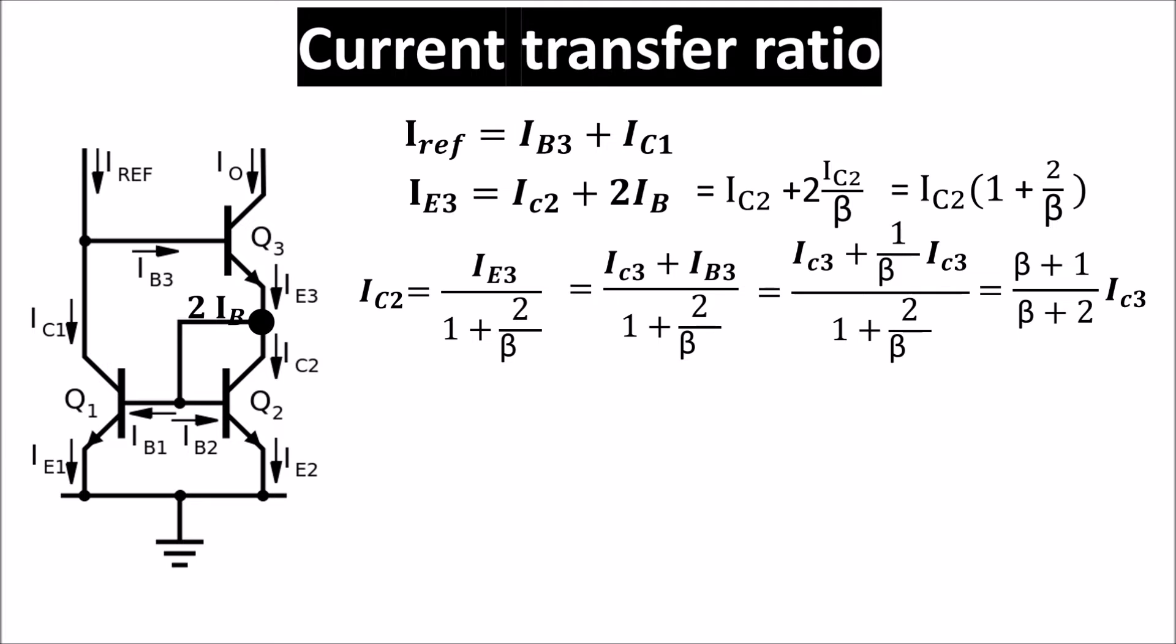So remembering that IRF is IB3 plus IC1 but IC1 is equal to IC2 equal to IC, we can write this. Remembering that IB3 is IC3 divided by beta and IC is equal to IC2, we can get this and sorting we get this.